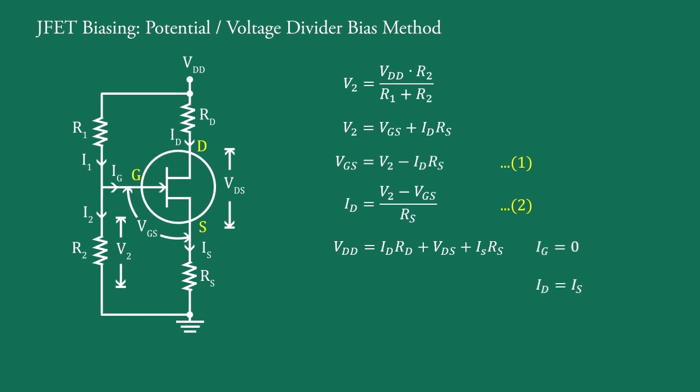Therefore ID equal to IS and hence we can write VDD equal to VDS plus IDRD plus IDRS. And therefore VDS equal to VDD minus ID into bracket RD plus RS.